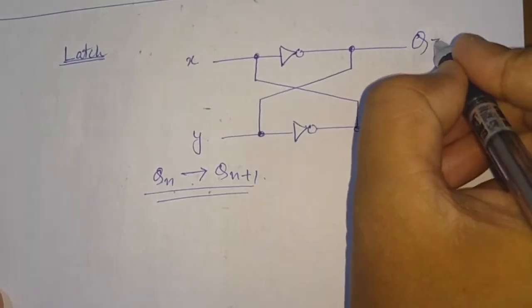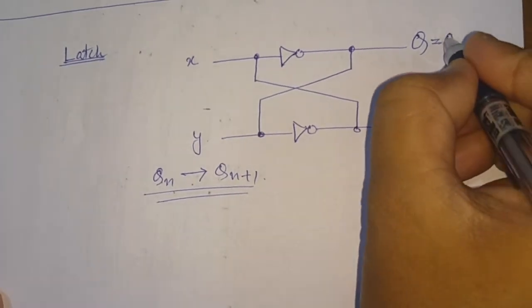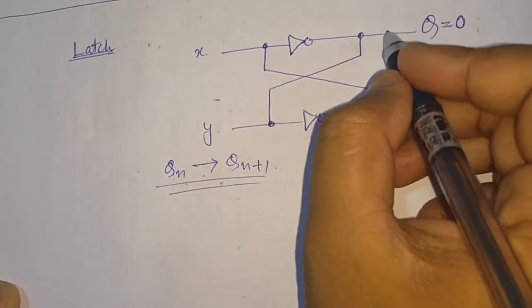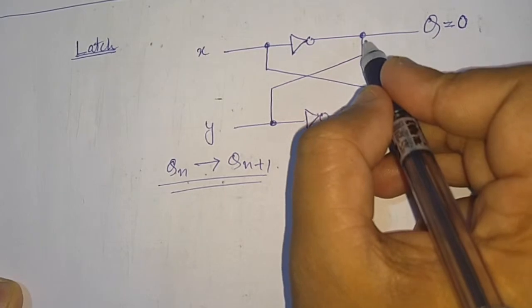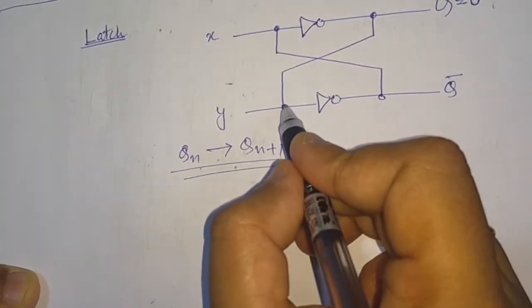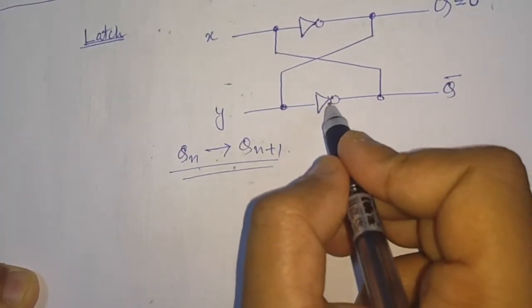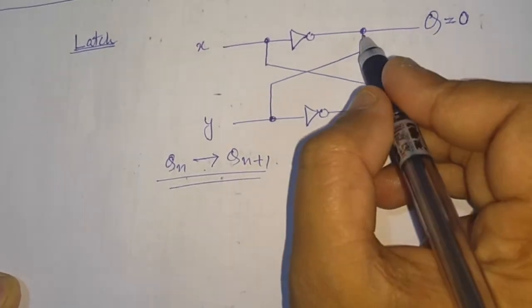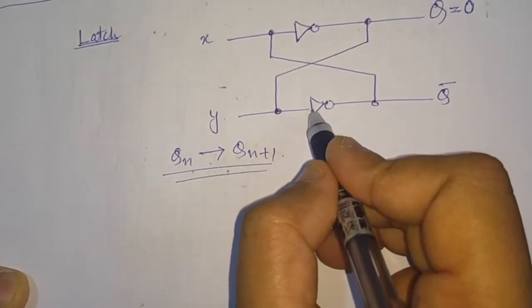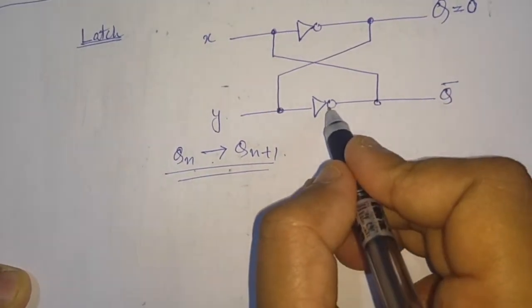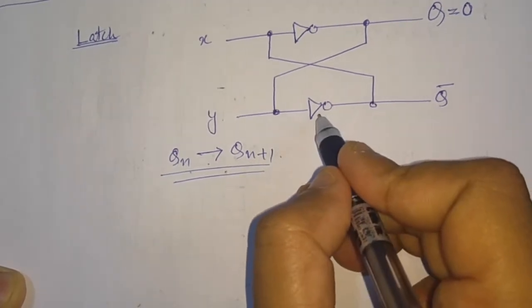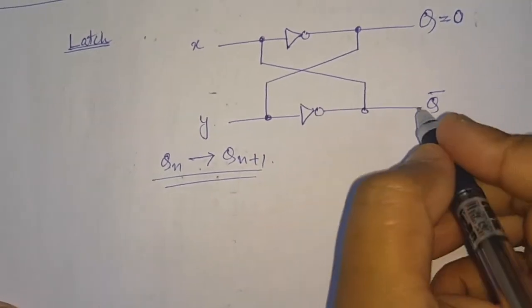Suppose for the first cycle we have Q = 0. That means here we have zero. This zero is redirected to this input side, input of this NOT gate. We will get here an inverted output because of this inverter and we will get here one.